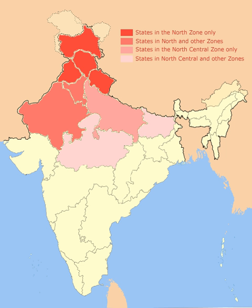The largest Hindu temple, Akshardham temple, the largest Buddhist temple in India, Mahabodhi, the largest mosque in India, Jama Masjid, and the largest Sikh shrine, the Golden Temple, are all in this region.